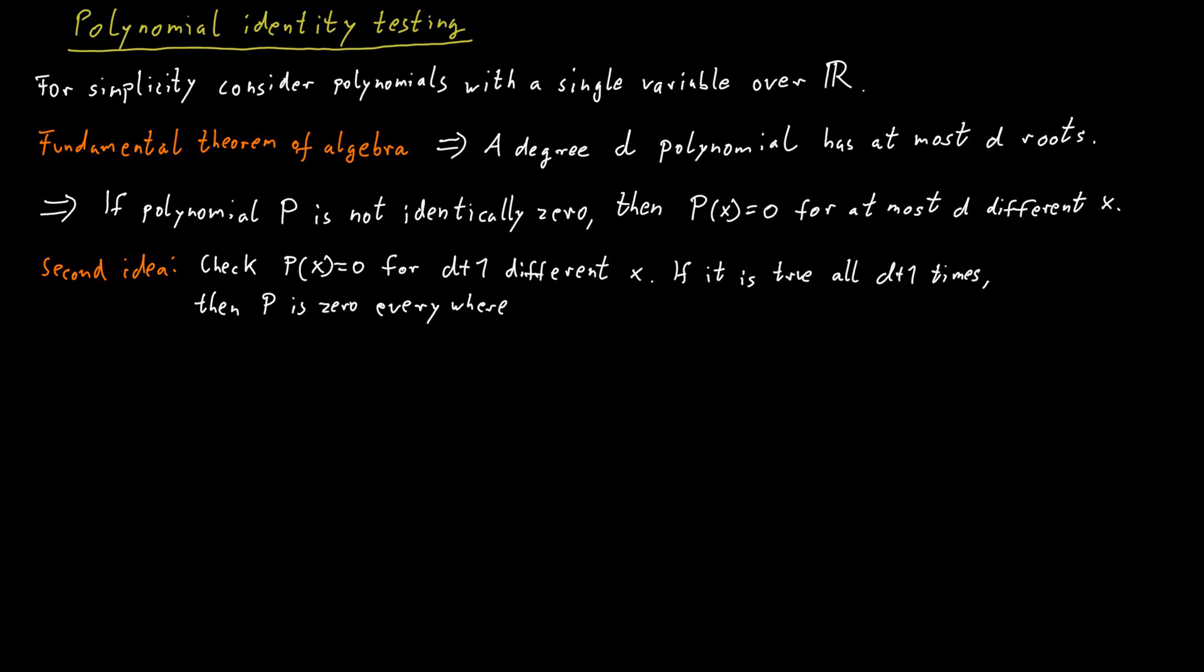There's only one problem with that particular approach. And that is the running time is not polynomial. Because we have to plug in d different values, well, d+1 different values for x and evaluate the polynomial for all those different values.